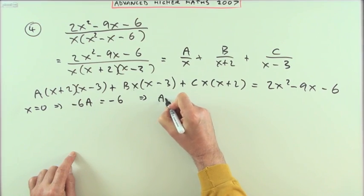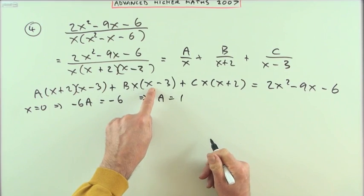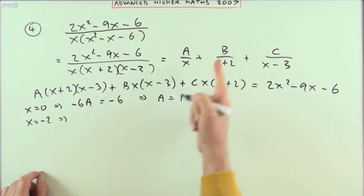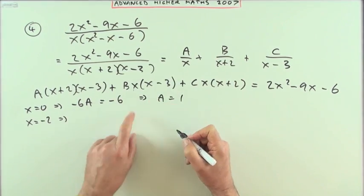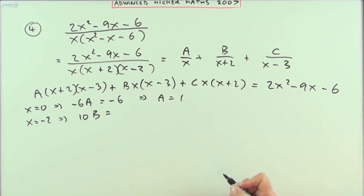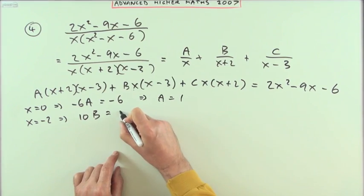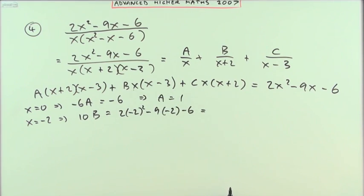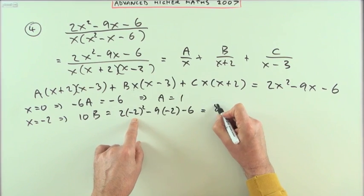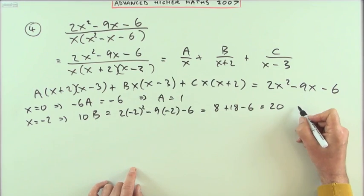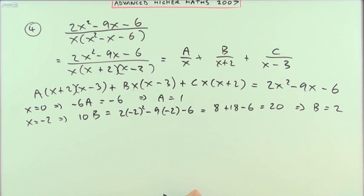Now if I want B, that means I want the (x+2)s to go. Notice that x+2, so if you let x = -2, you'll get the B. What's B going to read? Well, if x is -2, I've got -5 times -2 is 10, so I've got 10B equals... now I've got to do a calculation. I'll set it out: 2×(-2)² - 9×(-2) - 6. It's going to be 8 + 18 - 6, so it's going to be 20. So 10B is 20, means that B is going to be 2.